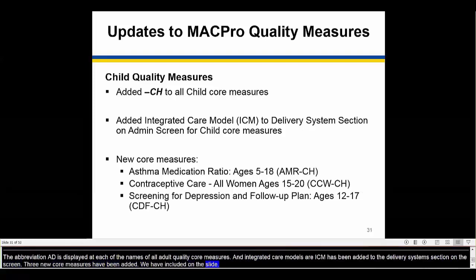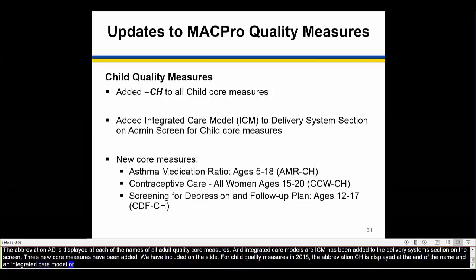For child quality measure reports in 2018, the abbreviation CH is displayed at the end of the names, and integrated care model, or ICM, has been added to the delivery system section on the admin screen. There are also three new core measures added to this authority, and they are also listed on the slide.